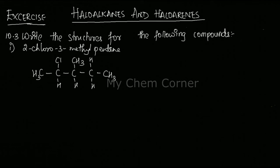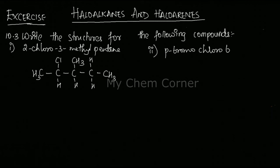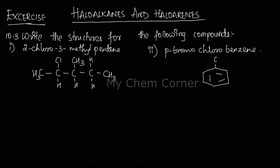The second one is para-bromochlorobenzene. The main structure is a benzene ring as the parent hydrocarbon. It says chlorobenzene, so Cl is on one position, and para to this I have bromo, so Br goes on the opposite side. This is a very simple structure.